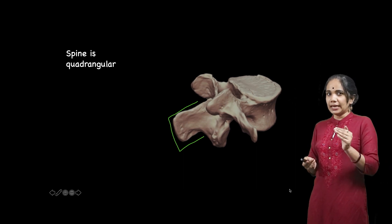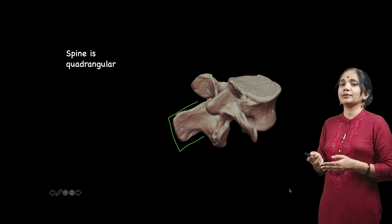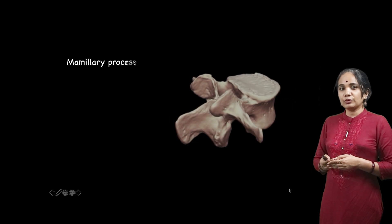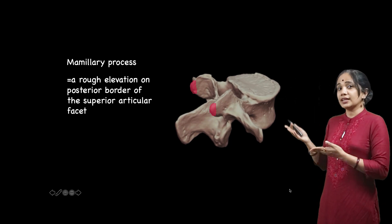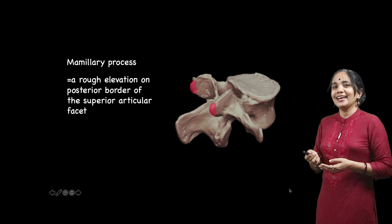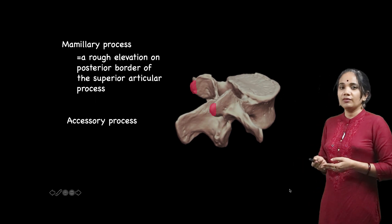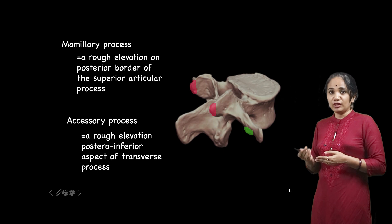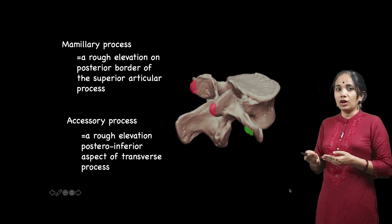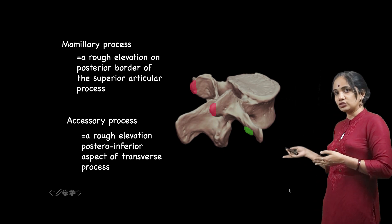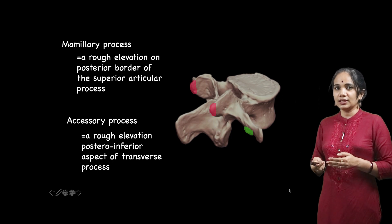Shifting to another angle shows perfectly the quadrangular shape of the spine of the lumbar vertebra. From this angle we can also make out two other characteristic features: the mammillary process, which is a rough elevation on the posterior border of the superior articular facet, and the accessory process, which is a rough elevation on the posterior inferior aspect of the transverse process. These are the distinctive features in this view.